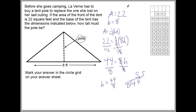Now with these answer grids, it doesn't really matter where you start and end as long as you have the right answer, but I think it's best to start to the left. You have as much room as you need, so you put in 5.5 and then bubble everything in. Come straight down and fill in the 5. Do the same thing with the decimal — this dot in the circle is the decimal one, and you've got to fill that in or it will be marked as wrong. Then 5 — come straight down and fill that in.